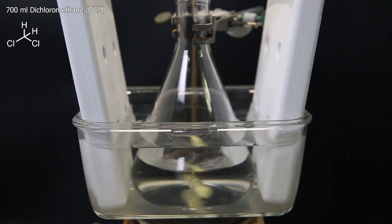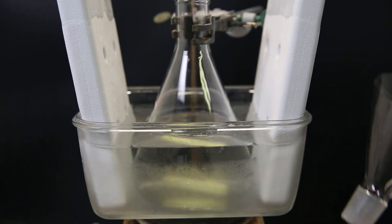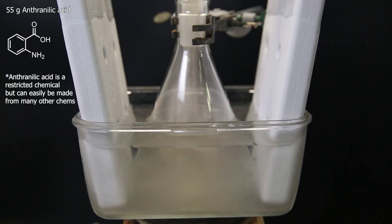Into this, I add 700 mils of the solvent dichloromethane and let it stir for a while until it's cold. When that happens, the first reagent I add is 55 grams of anthranilic acid.